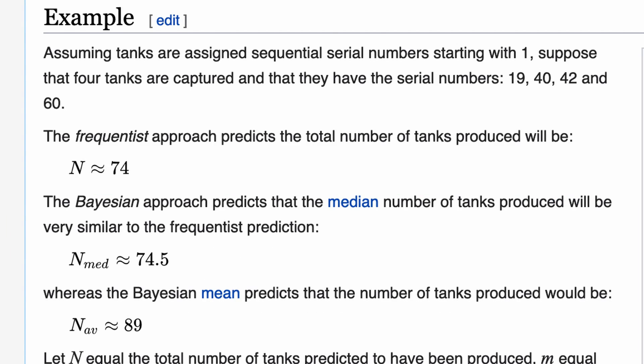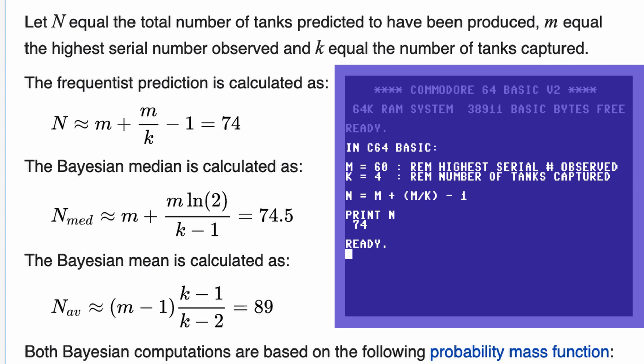They give an example. Assuming tanks are assigned sequential numbers starting with 1, suppose that 4 tanks are captured and they have the serial numbers 19, 40, 42, and 60. Let n equal the total number of tanks predicted to have been produced, m equal to the highest serial number observed, and k equal to the number of tanks captured. So the number of tanks is estimated to be m, the highest serial number, plus m divided by k, the number of samples, minus 1. And that's 74 in this example. There are other approaches to this problem, such as Bayesian inference, but I've chosen to go with the slightly simpler frequentist approach.